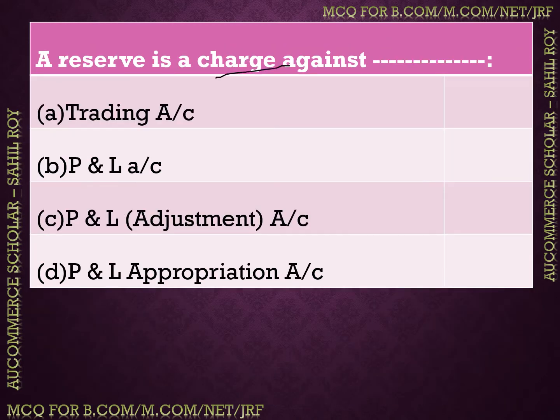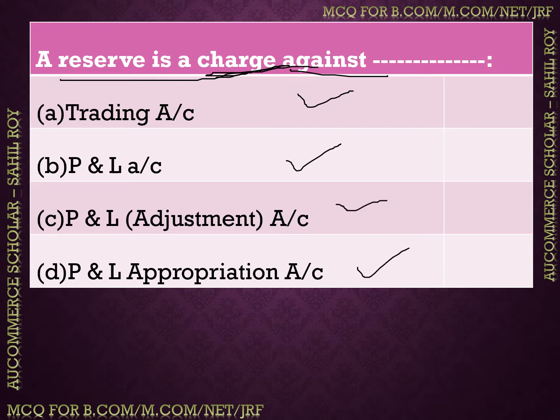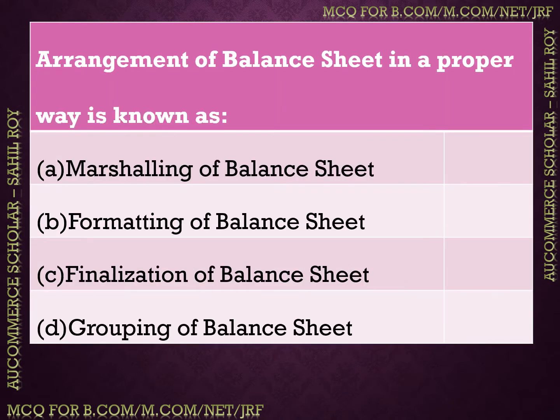The next question is: a reserve is a charge against which account? Here, 'charge' means something you must pay whether profit or loss — for example, a bank loan is a charge. We have four options: (A) trading account, (B) profit and loss account, (C) profit and loss adjustment account, (D) profit and loss appropriation account. The correct answer is Option D — reserve is a charge against the profit and loss appropriation account.